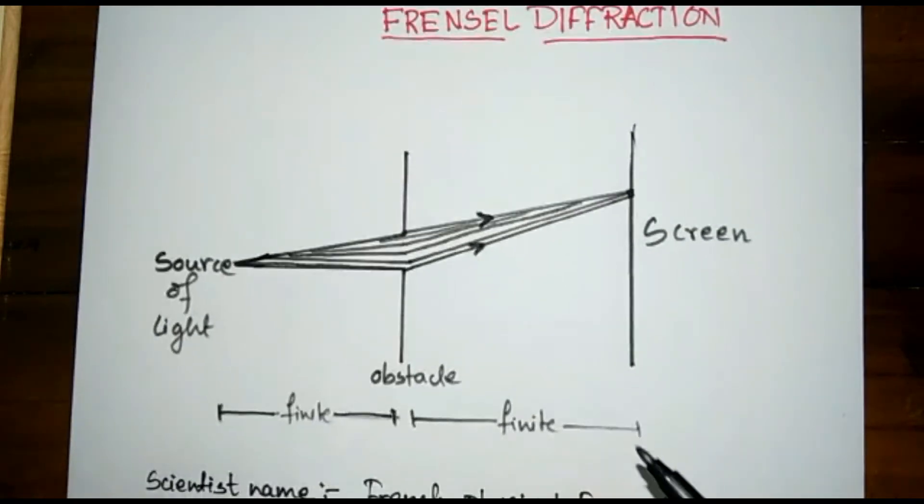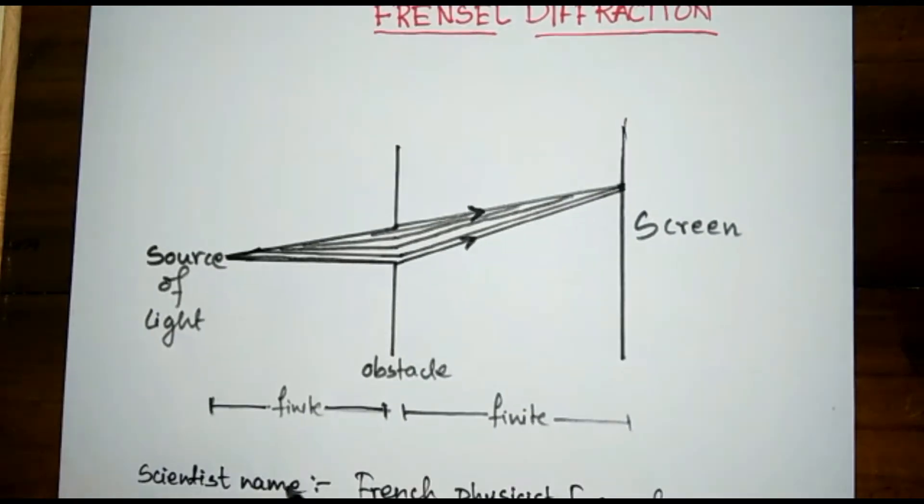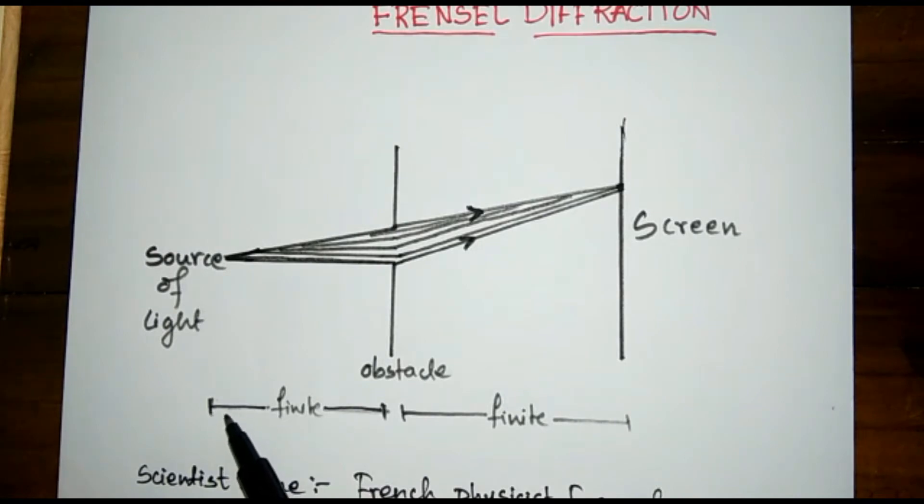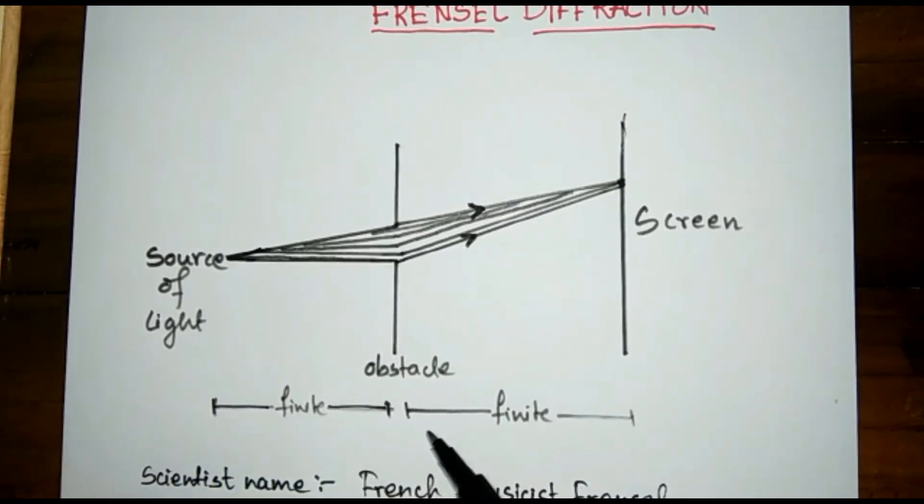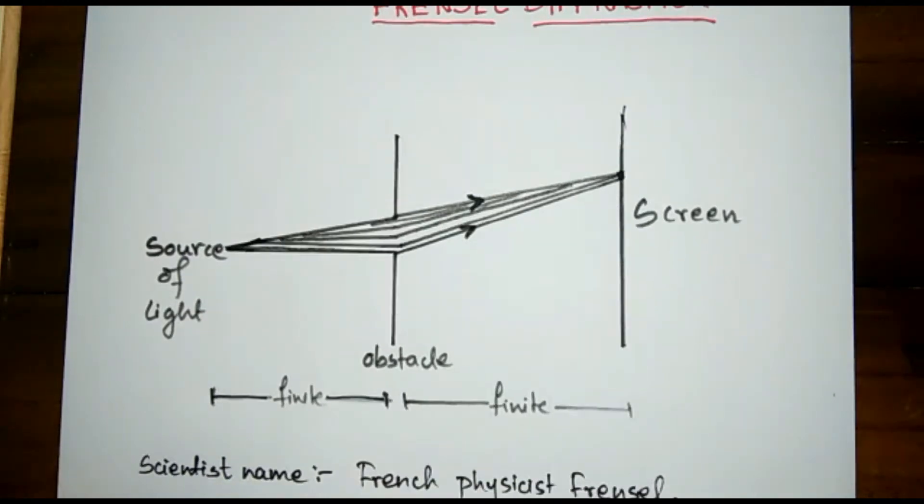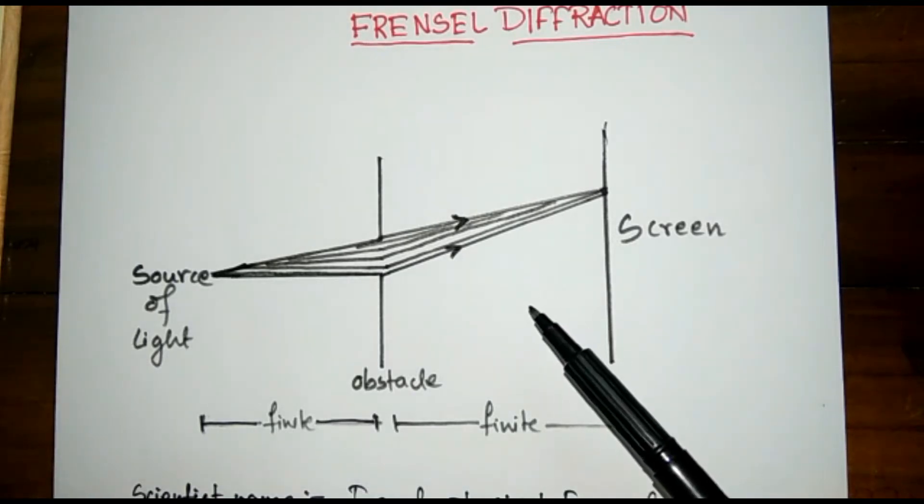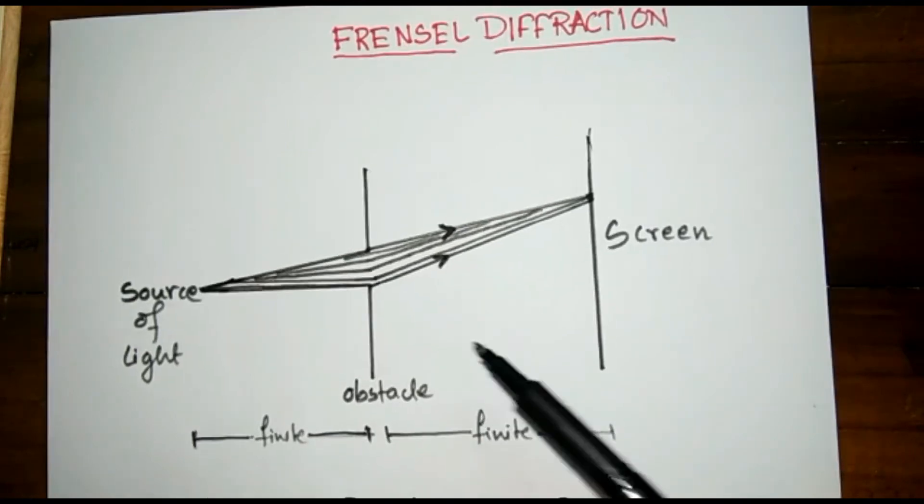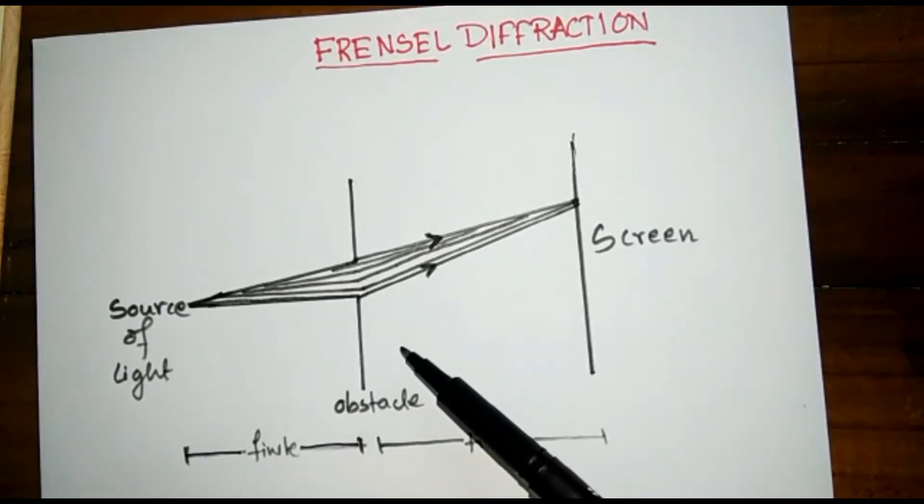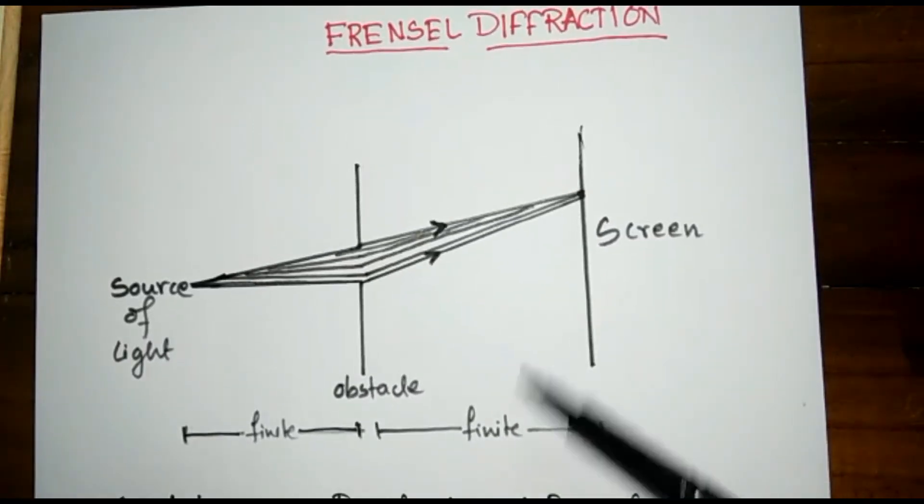In Frenel diffraction, the distance of the source of light and obstacle is finite, and the distance of the obstacle and screen is finite. So in this type of diffraction, the source of light or the screen are at finite distances from the slit, that is the obstacle.